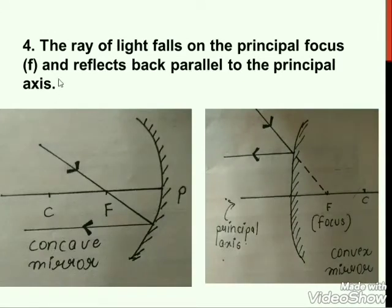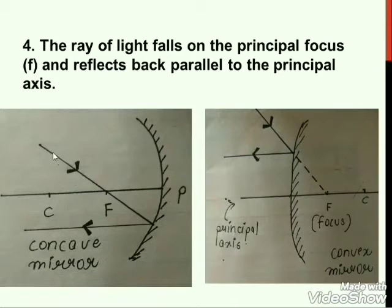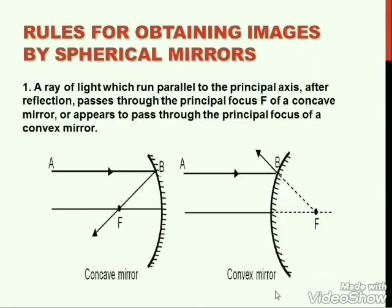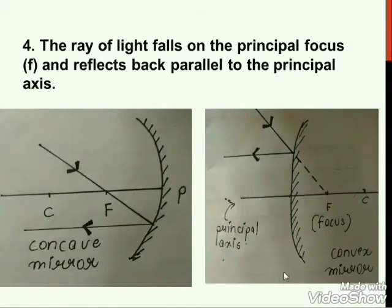Fourth rule — the opposite of the first one: a ray of light incident through the principal focus F reflects back parallel to the principal axis. So in the first rule a parallel line passes through focus, and now a line incident to focus is reflected back parallel to the principal axis. You can remember the fourth rule as the opposite of the first rule.